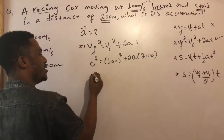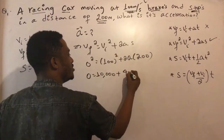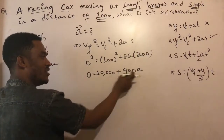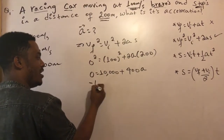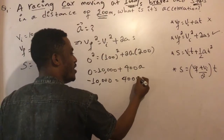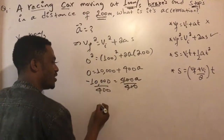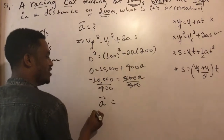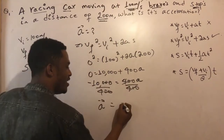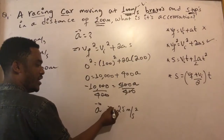Zero squared is zero. So we have zero equals V initial squared plus 2 times acceleration times distance. This gives us a negative value for acceleration, meaning the car is decelerating. Acceleration equals negative 50 meters per second squared.